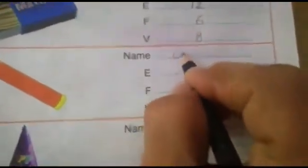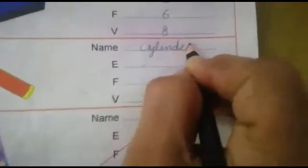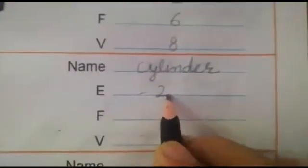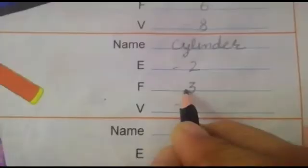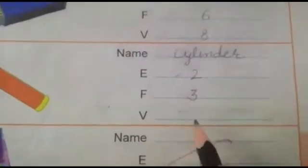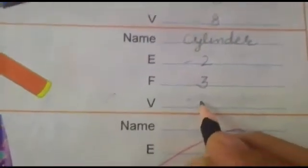We will write the spelling first: cylinder. Now edges — there are 2 edges. Faces are 3. And vertices are 0.